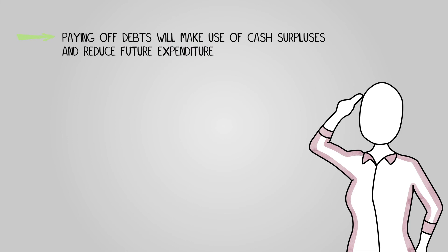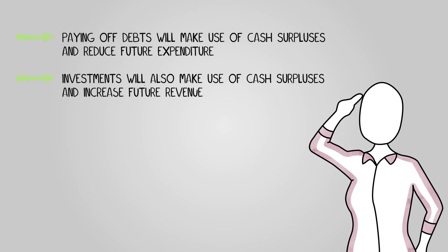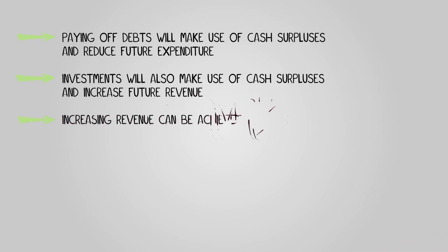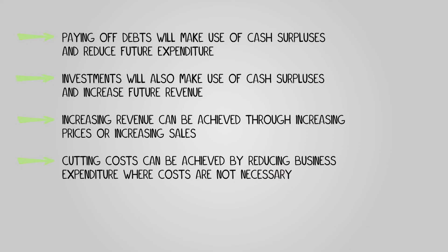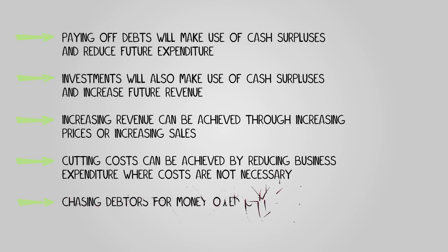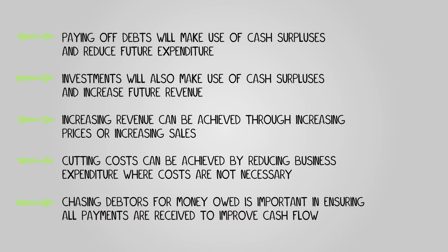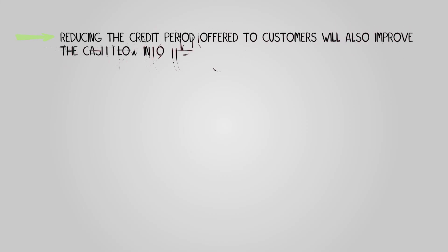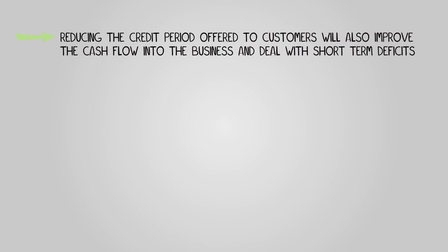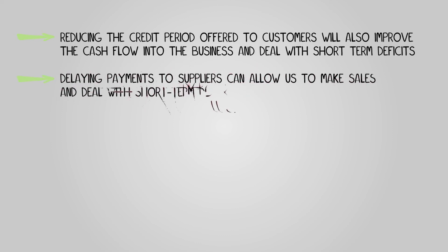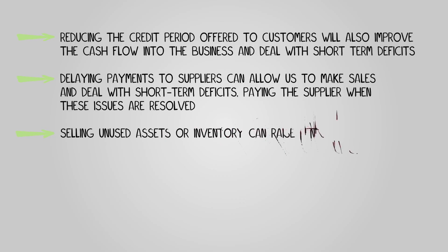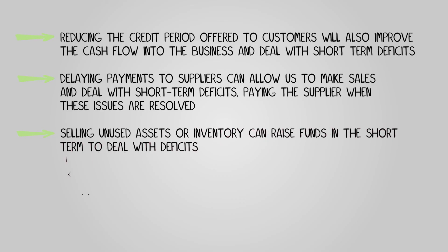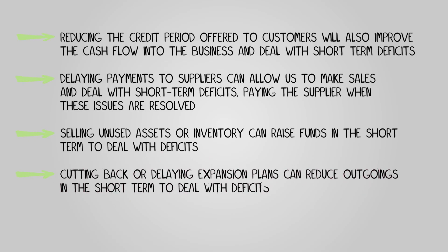In conclusion, paying off debts will make use of cash surpluses and reduce future expenditure. Investments will also make use of cash surpluses and increase future revenue. Increasing revenue can be achieved through increasing prices or increasing sales. Cutting costs can be achieved by reducing business expenditure where costs are not necessary. Chasing debtors for money owed is important in ensuring all payments are received. Reducing the credit period offered to customers will improve cash flow into the business. Delaying payments to suppliers can allow us to make sales and deal with short-term deficits. Selling unused assets or inventory can raise funds in the short-term, and cutting back or delaying expansion plans can reduce outgoings to deal with deficits.